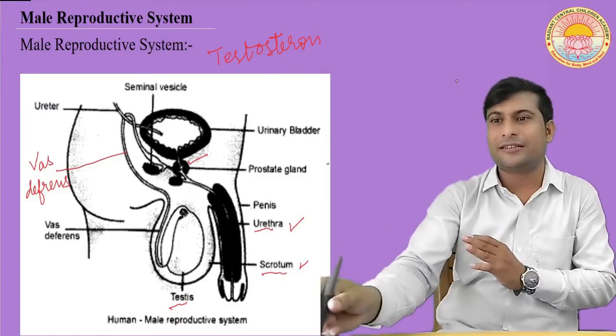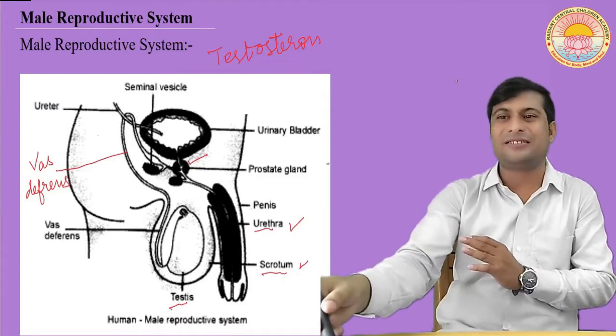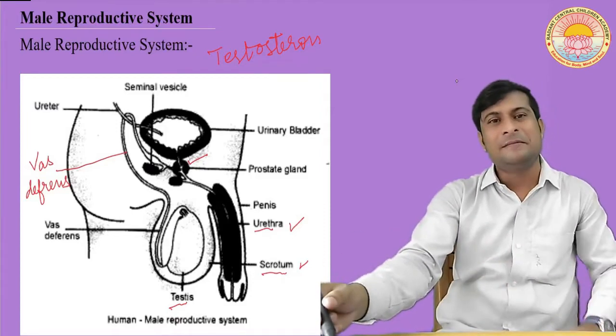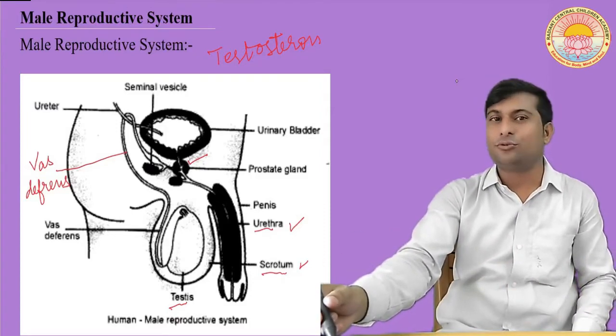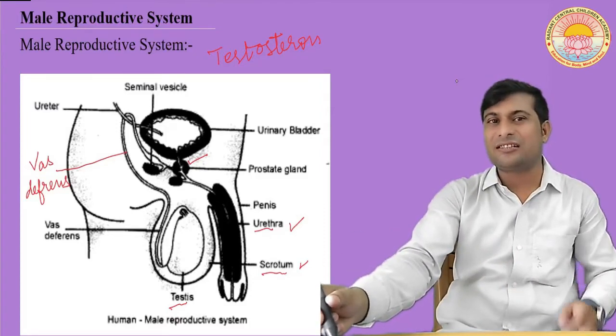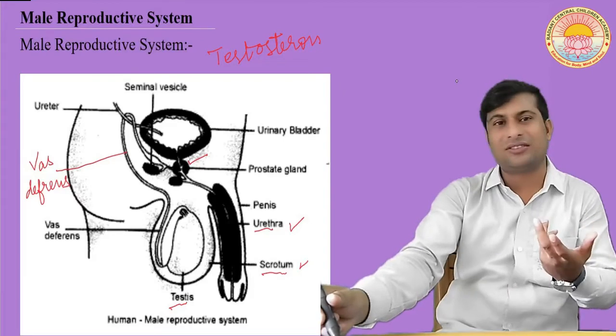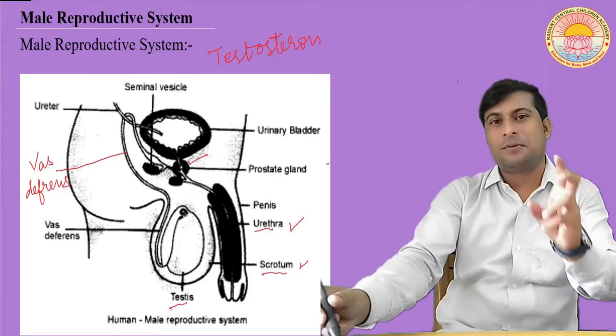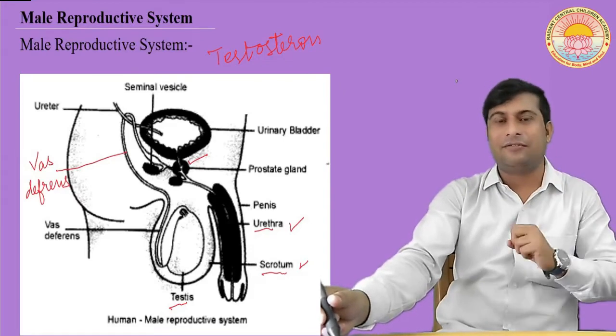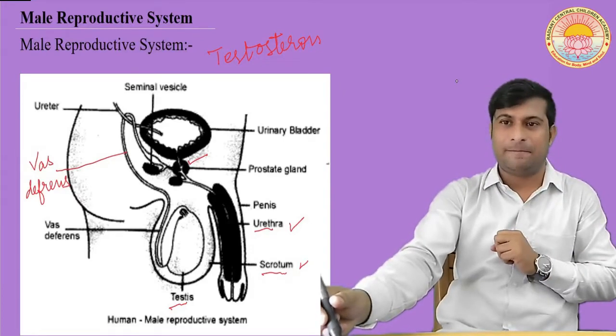The urethra is a common passage for both urine and the delivery of sperm.